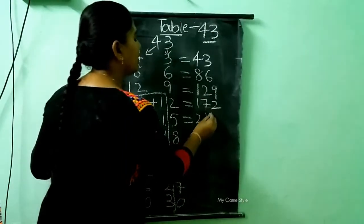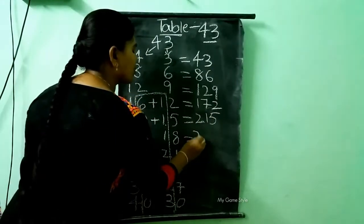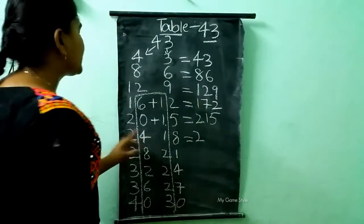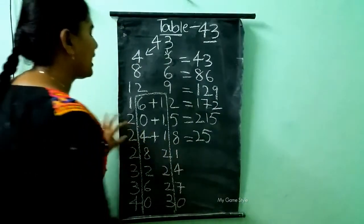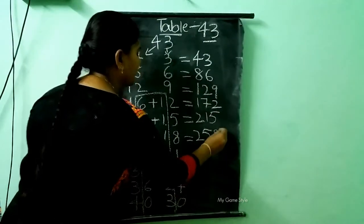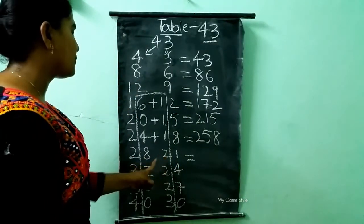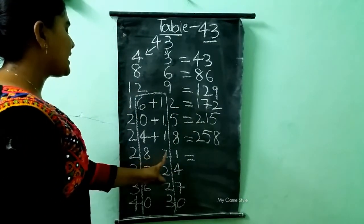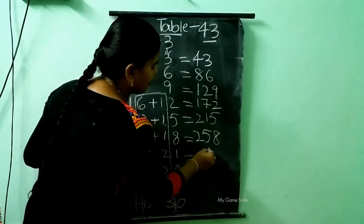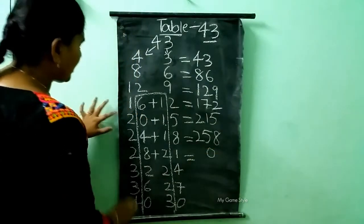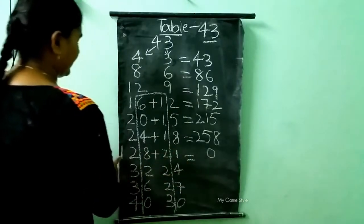Here 5 is there, so 5 as it is. Here also same thing — 2 is there, 2 as it is. Then 4 plus 1, how much children? 5. Here 8 is there, so I am writing 8 as it is here. And here 1. First we need to add these both numbers: 8 plus 2, how much children? 10. So I am writing 0 in the middle and taking 1 borrow here. 10, I am writing like this.